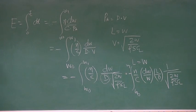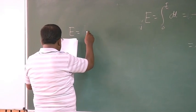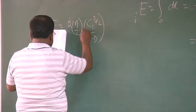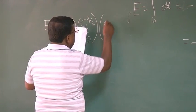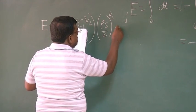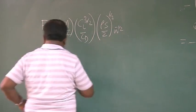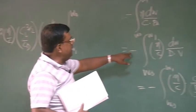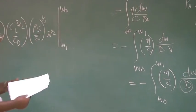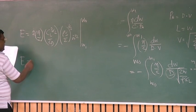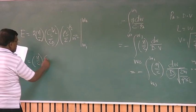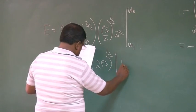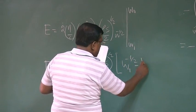Now if I write further, if I further simplify, I can write E as 2η by C, CL^(3/2) by CD, square root of ρS by 2, W^(-1/2), where W₁ to W₀. Please note that the order of integration has been changed to absorb this minus sign. So if I expand it, I get an expression E is equal to η by C, CL^(3/2) by CD, square root of 2 by ρS, 2 times W₁^(-1/2) minus W₀^(-1/2).